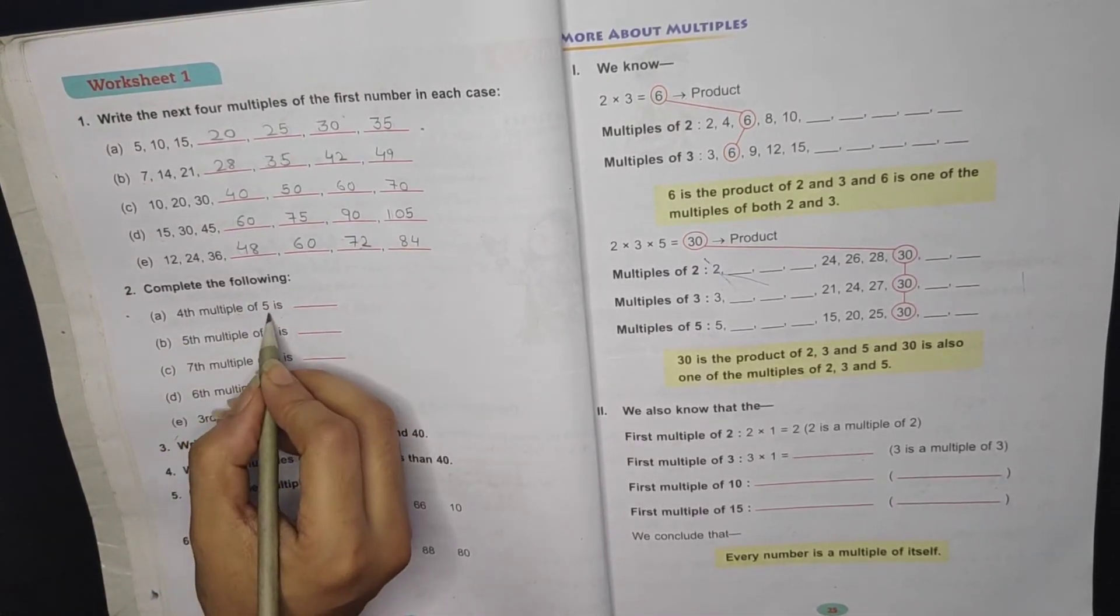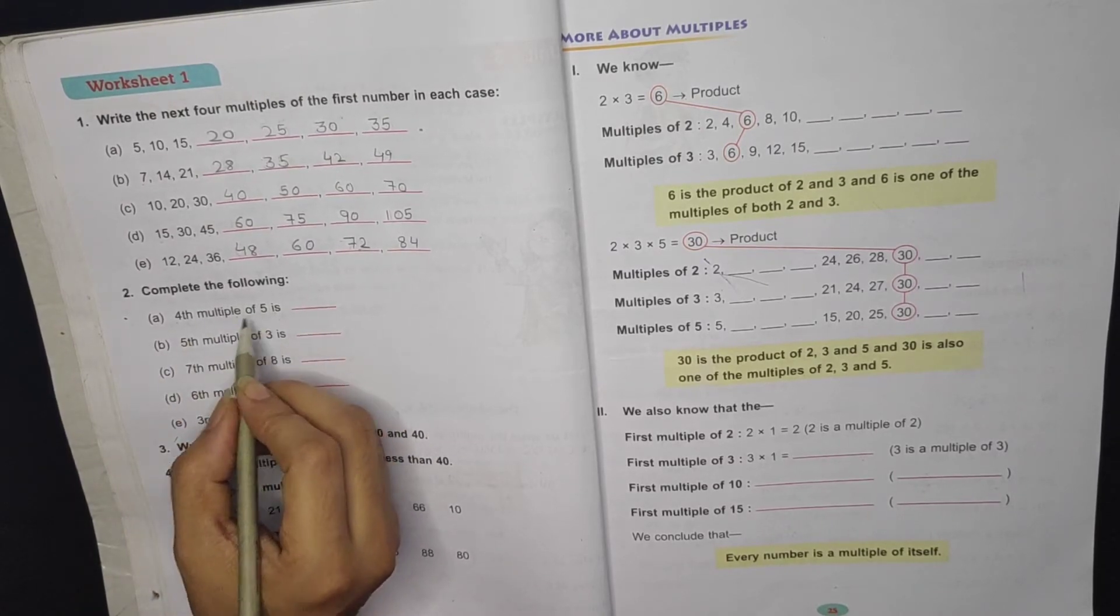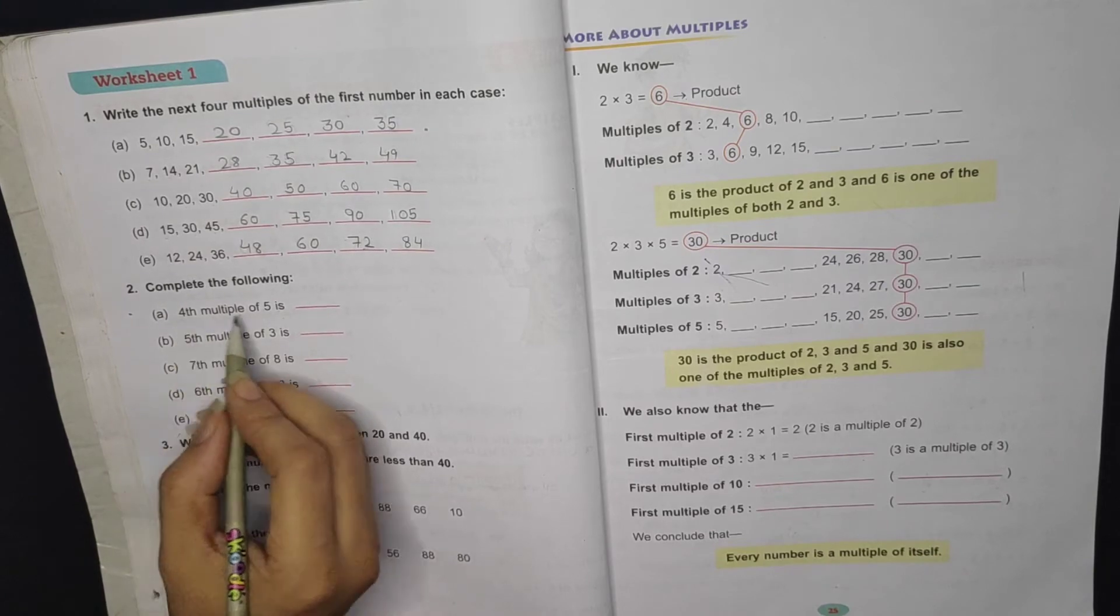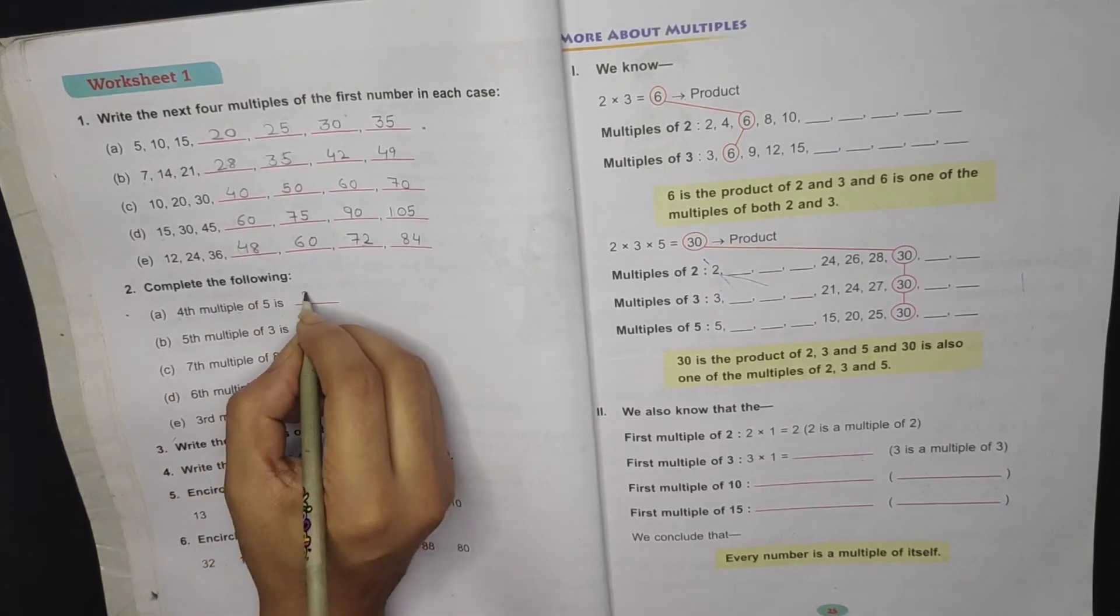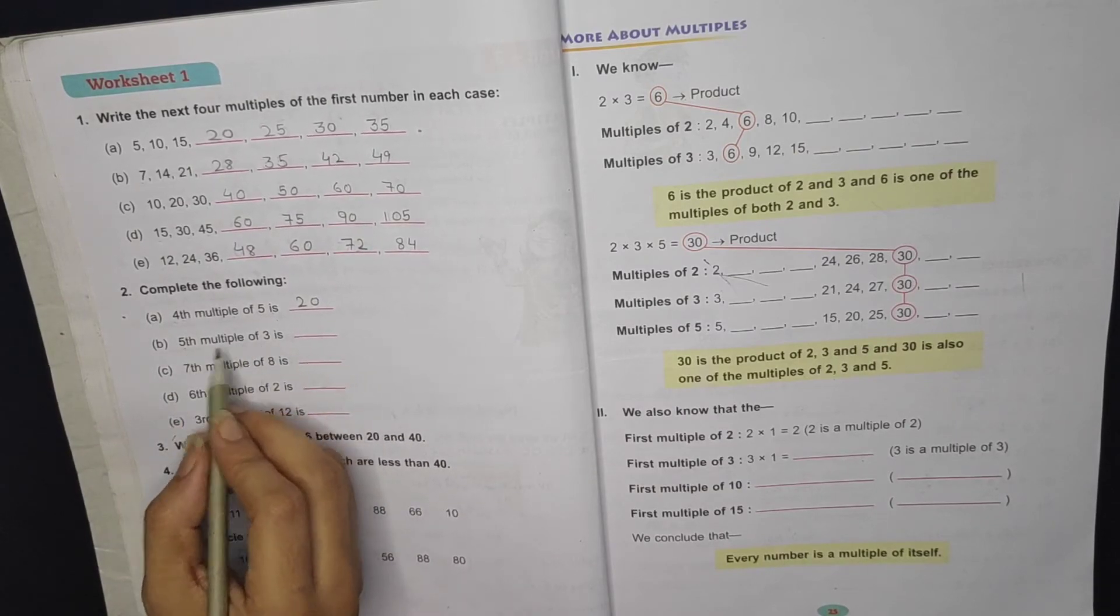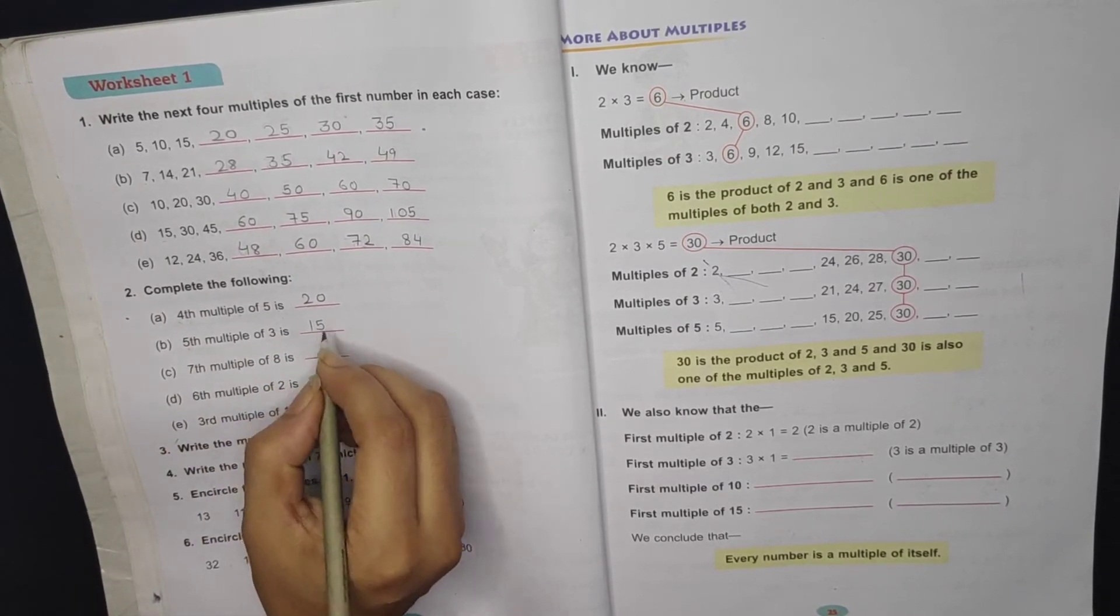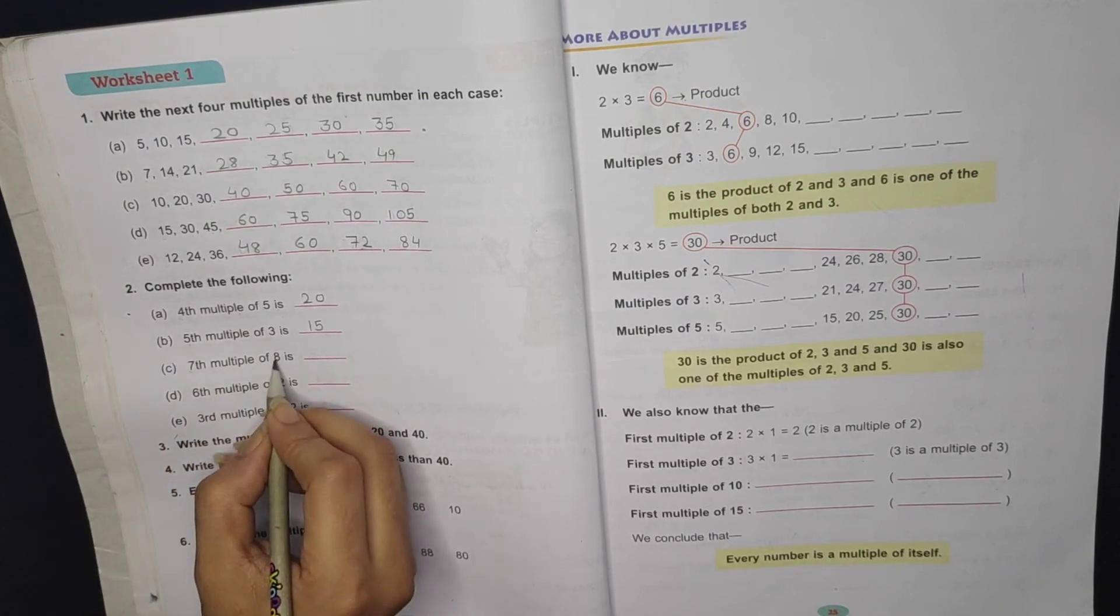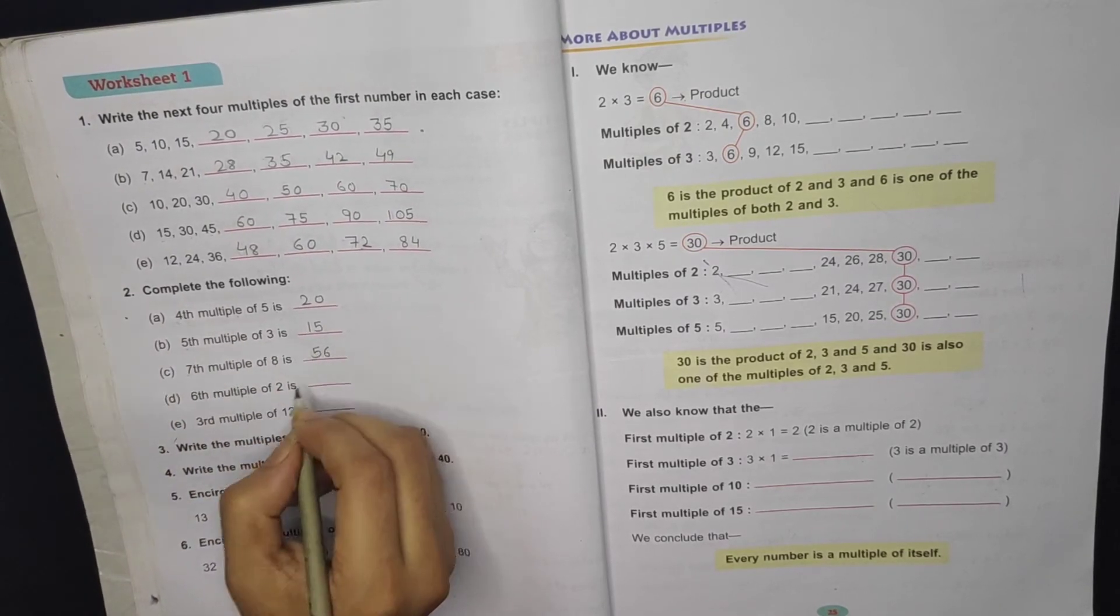Now the next thing, 4th multiple of 5. 4th multiple of 5. 5 times 4 is 20. And then 7th multiple of 8, 7 times 8, 7 times 8 is 56.